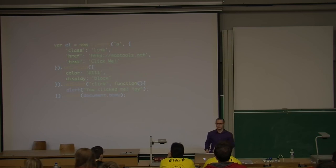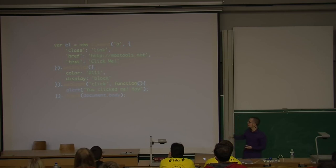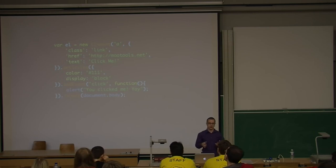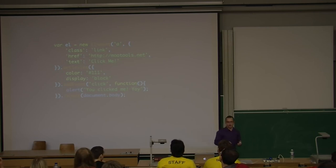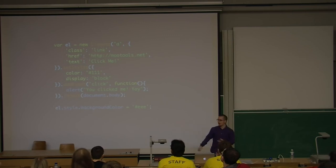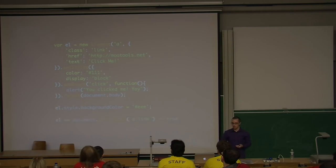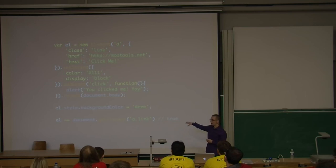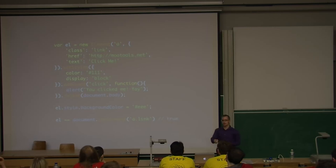Let's extend the example: we create a new element, set styles for color and display, add a click event that alerts 'you clicked me', and inject it into the document. This is not just an object that references to an element — this is the real element. You can access the style property on elements directly. You can't do that in other libraries. We have the getElement method which queries the page, and it returns the real element — not just an object that references to that element. In other libraries you can't do that direct comparison.